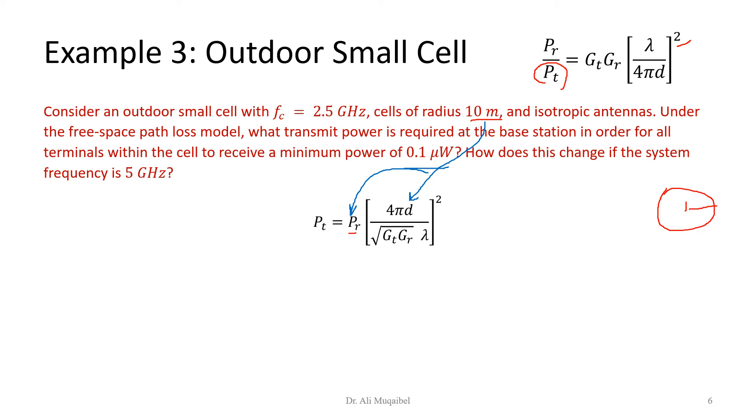The gain of the antenna is one because we have isotropic radiator. Lambda we can get from f: we know that c equals λf, so λ times f is a fundamental equation. Now we substitute. Everything is given: G_t equals G_r equals one, λ will be 0.12 meters, d equals 10 meters, and P_r equals 0.1 microwatt. Substituting the numbers, we've got that the required transmitted power is 0.1097 watts, or if you like, it's going to be 109 milliwatts or 110 milliwatts approximately.